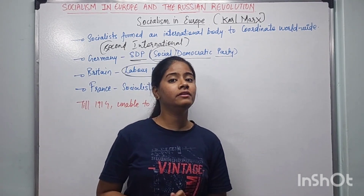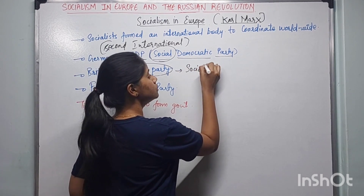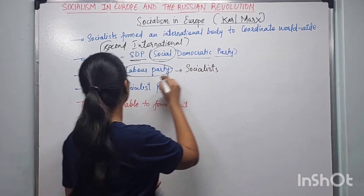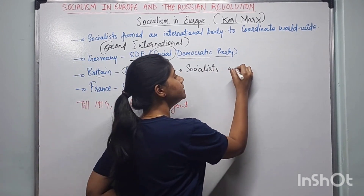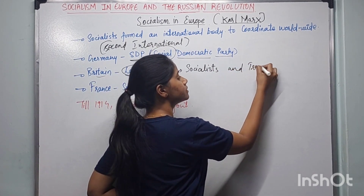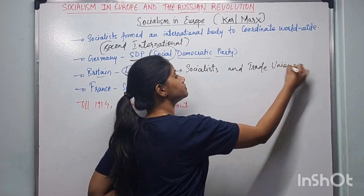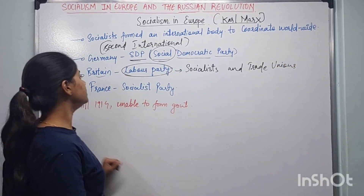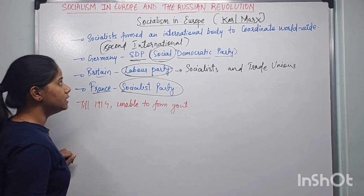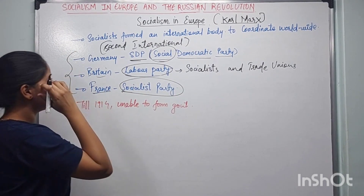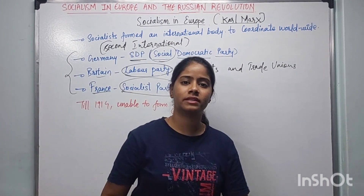There are also trade unions in Britain who belong to the socialists. Then there is a party in France called the Socialist Party. So we have seen three important countries — France, Germany, and Britain — each supporting socialism through their own political parties.